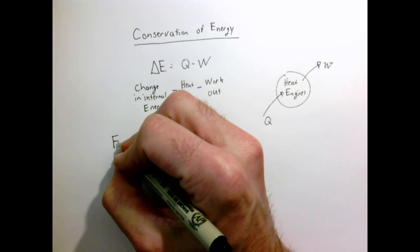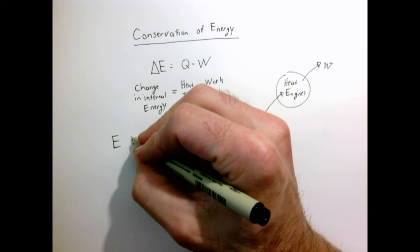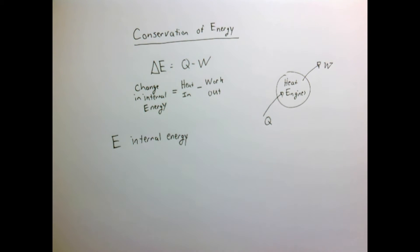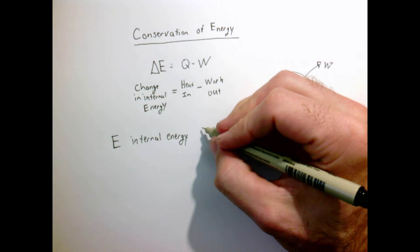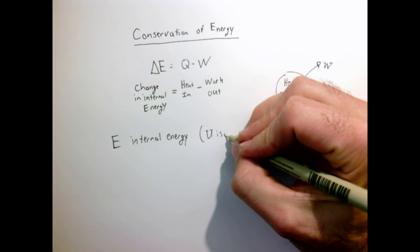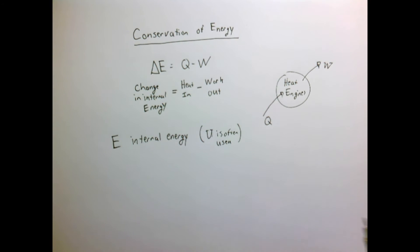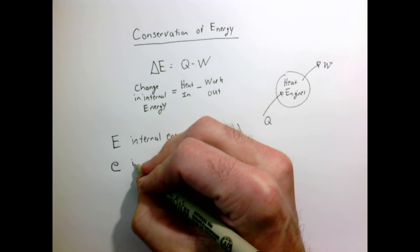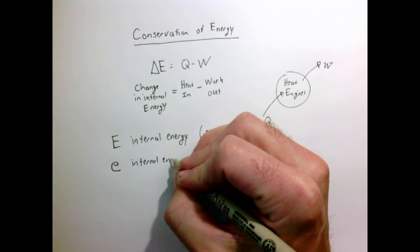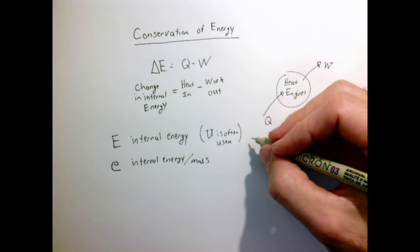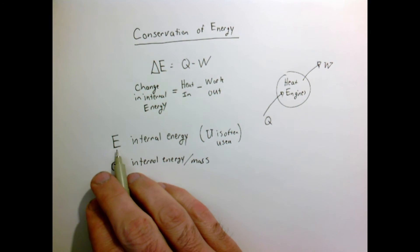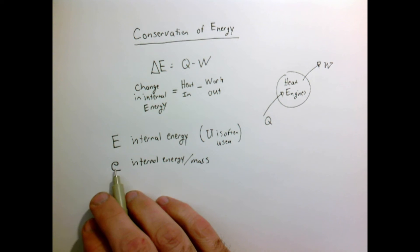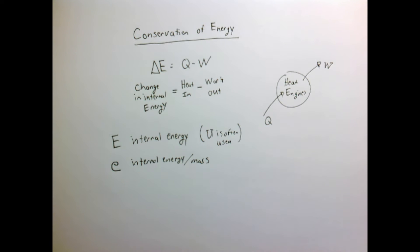We use the variable E in this course to mean the internal energy — what we talked about when discussing conduction as the thermal energy of an object. In many textbooks you'll find U is used, but since we often use U for velocity, we'll use E for internal energy. We also use lowercase e to mean the internal energy per unit mass. When we talk about the total amount of internal energy we use E, and when we talk about internal energy per unit mass we use lowercase e.